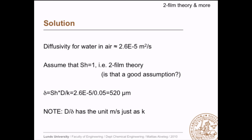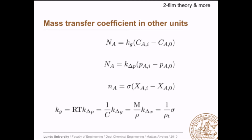Mass transfer coefficients can be expressed in different units. One form expresses the driving force as concentration difference, another as pressure difference, and another as water content (kg water per kg dry air) for an air-water system. Since these coefficients differ only in units, they can be converted to each other.